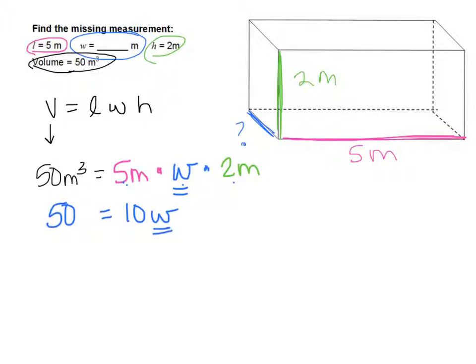So I have 10W on this side, because I don't know what W stands for. And I had 50 on this side. So now I have to get the width by itself. So I'm going to divide by 10, because anything divided by itself is one. So I'm going to do that to both sides. So once I divide 50 by 10, some of you have already done this in your head, I'm going to have 5. So 5 is what my width is equal to. So I can come fill that in my blank.